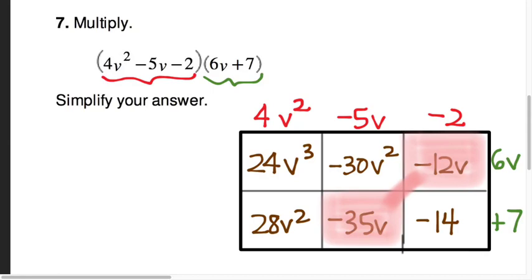So -12v, -35v, those add together to give me -47v. Similarly, with the v² terms, those are also arranged on a diagonal with one another. 28v², -30v², those happen to be right here. Add those together, and I end up with -2v².